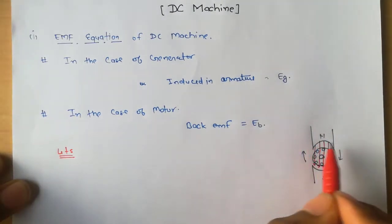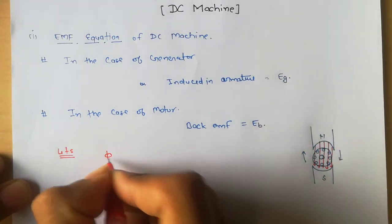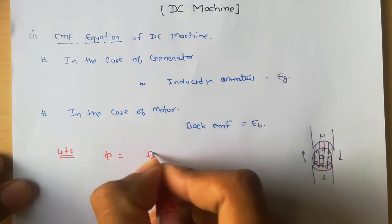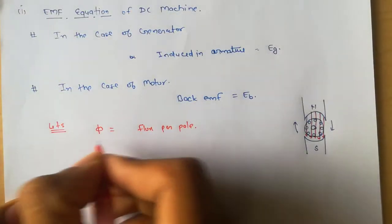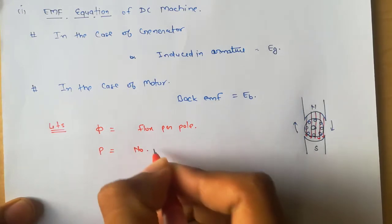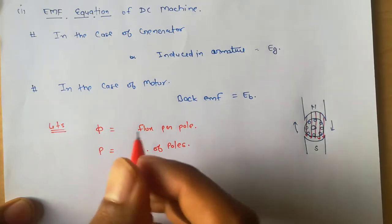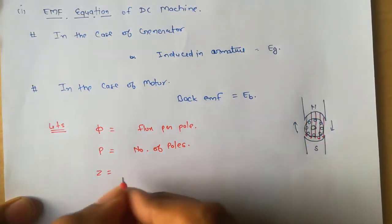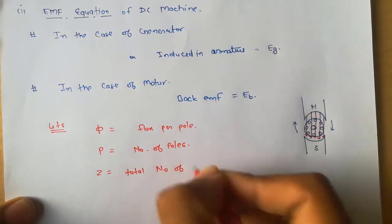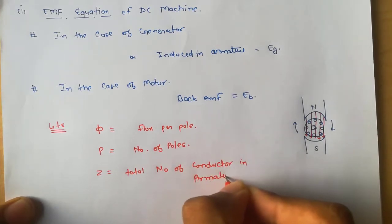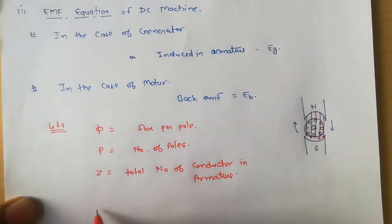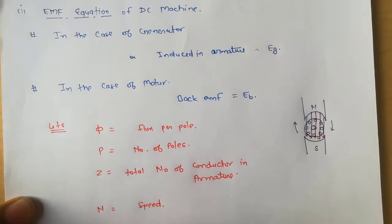Now let's define our variables. Phi (φ) is the flux per pole. P is the number of poles. Z is the total number of conductors in the armature section. N is the speed. And A is the number of parallel paths.